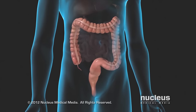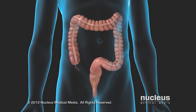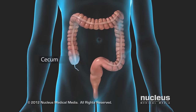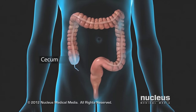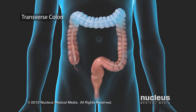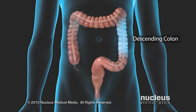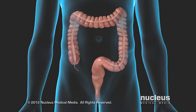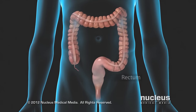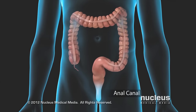Your large intestine, also known as your colon, includes the cecum, ascending colon, transverse colon, descending colon, sigmoid colon, rectum, and anal canal.